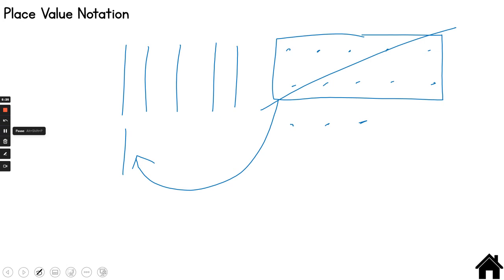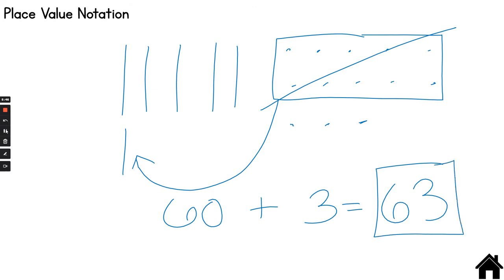Now all I have to do is go back and add my tens and ones together. I have 6 tens: 10, 20, 30, 40, 50, 60. And I have 3 ones. 60 and 3 is 63. Let's take a look at one more strategy.